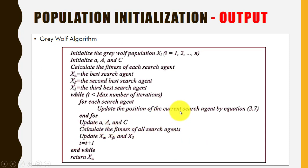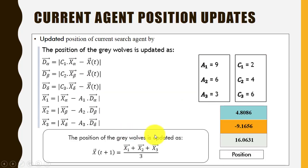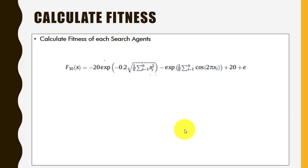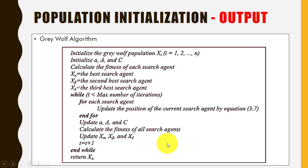After updating the positions, we calculate the fitness value for each wolf again using the objective function. Then we rank the wolves according to their fitness values, just as we did before, to find the current best wolves. Based on their rank, we identify the new alpha, beta, and delta wolves.